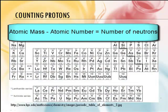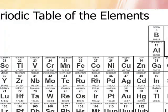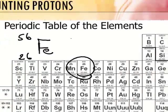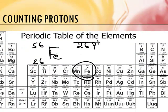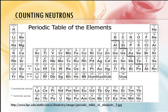Let's do one more. Iron is an interesting element because it's Fe — it comes from the word ferrous. Iron is Fe, atomic number 26, mass number 56. So it's going to have 26 protons, 26 electrons, and 56 minus 26 equals 30 neutrons. It's just addition and subtraction and you're good on that.